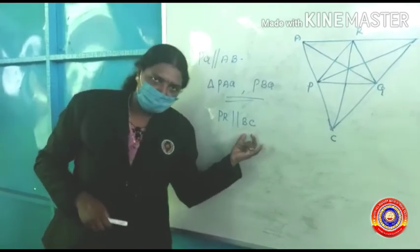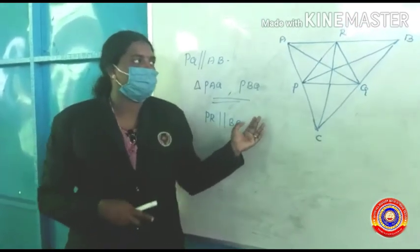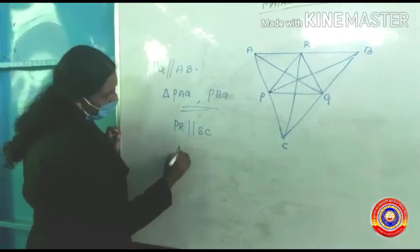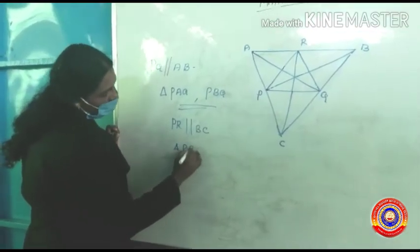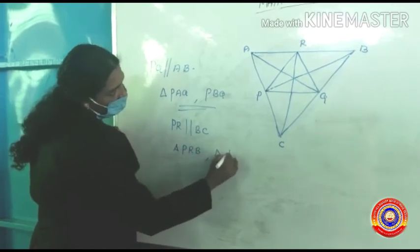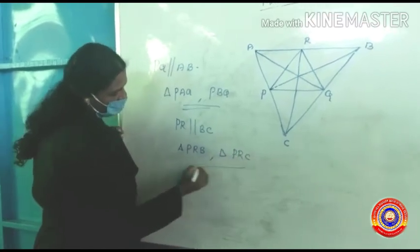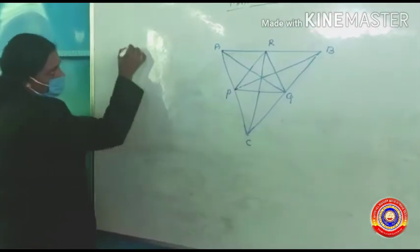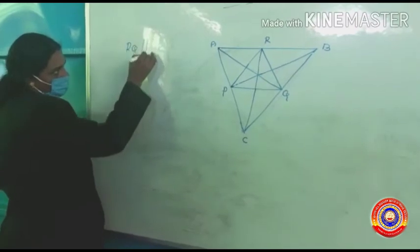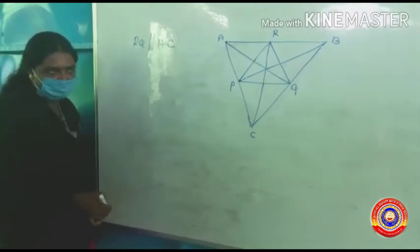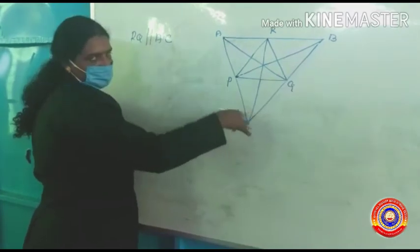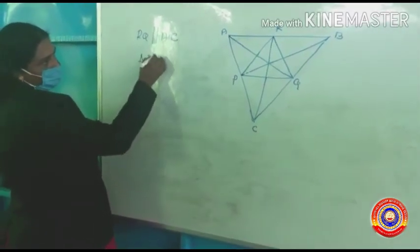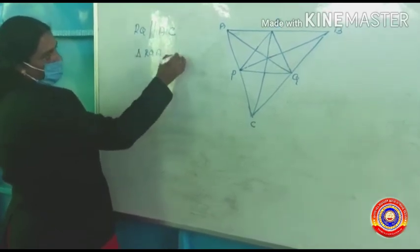Similarly, we can consider PR is parallel to BC. So we got two triangles: triangle PRB and triangle PRC have the same area as that of triangle PQR. Next, RQ is parallel to AC. So triangle RQA and triangle RQC have the same area as that of triangle PQR.